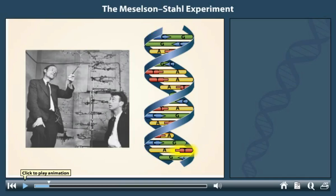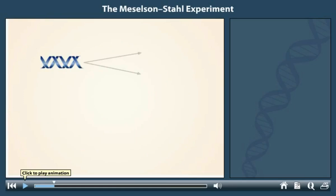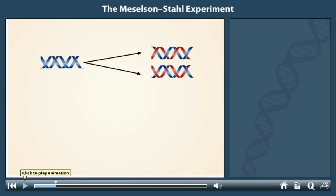The complementary nature of the two strands suggested to the scientists a model for DNA replication. They proposed that the old strands serve as templates to make new, complementary strands. The two resulting double helices would each contain one new and one old strand.